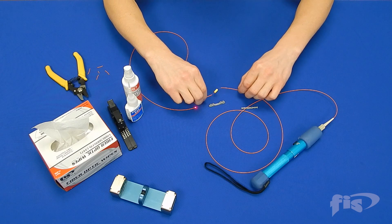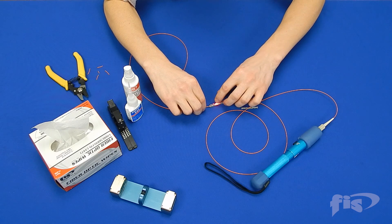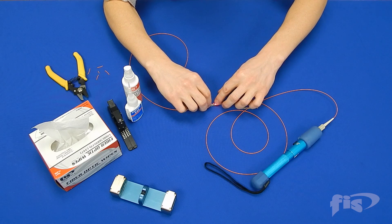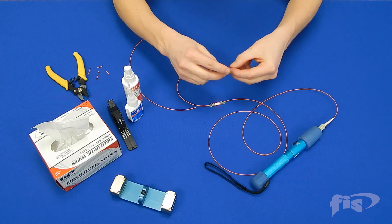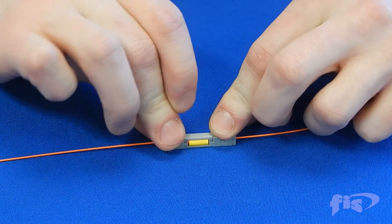To install the lockjaw, begin by placing the bottom piece down and place the lab splice in the middle, making sure the 900 micron buffer sits in the V-groove. Snap the top piece in place.